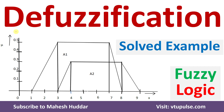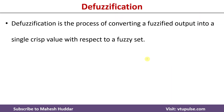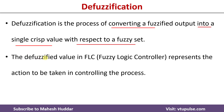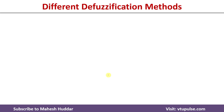Welcome back. In this video, I will discuss different types of defuzzification techniques in fuzzy logic with the help of a simple solved example. Defuzzification is a process of converting a fuzzified output into a single crisp value with respect to a fuzzy set. The defuzzification value is used to take action in a controlling process. Here we have different defuzzification methods.